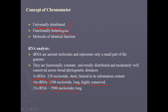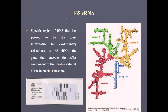These properties — conserved, functionally constant, universally distributed, and a suitable length — give 16S rRNA advantages over other nucleic acids to be selected as a chronometer. Just as a chronometer tells time from one point to another while remaining constant, using 16S rRNA it remains constant in itself but tells us who is related to whom. There are domains within the 16S rRNA structure that are conserved through evolutionary history, and this gene, which encodes the RNA component of the small subunit of the bacterial ribosome, is truly the molecular chronometer.